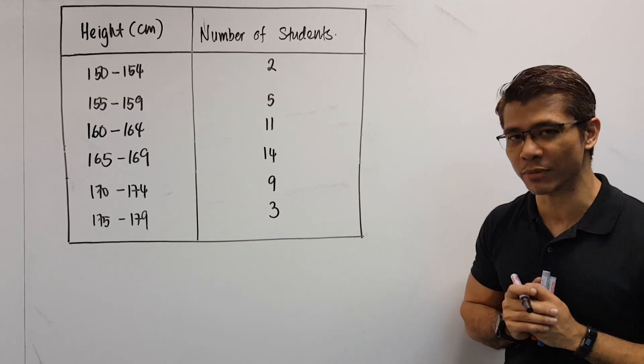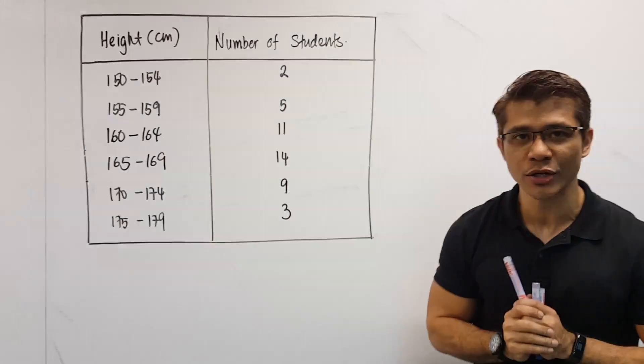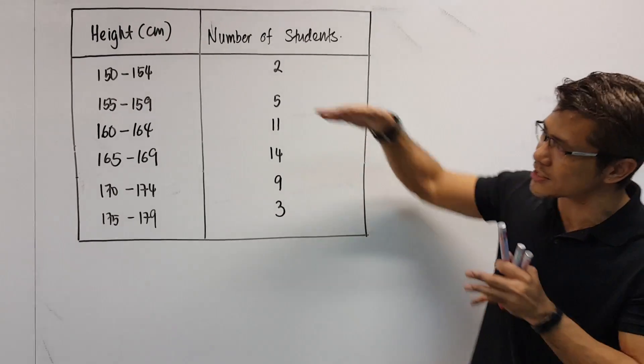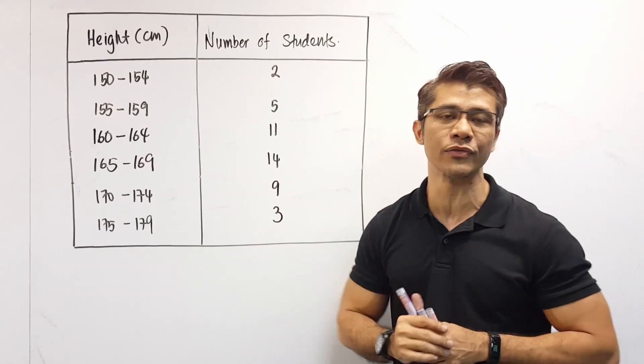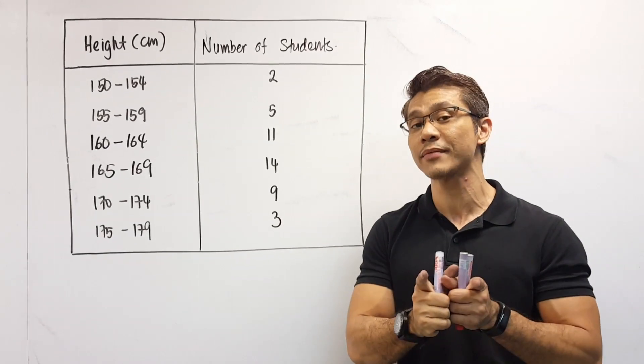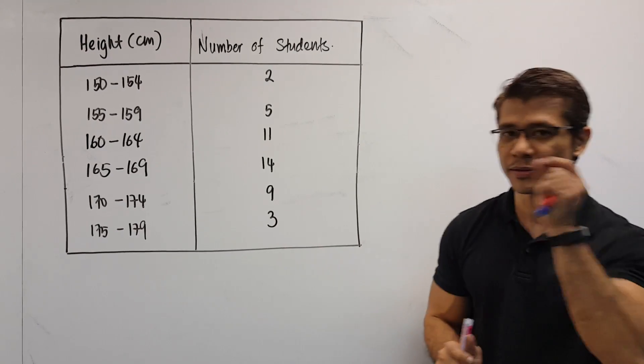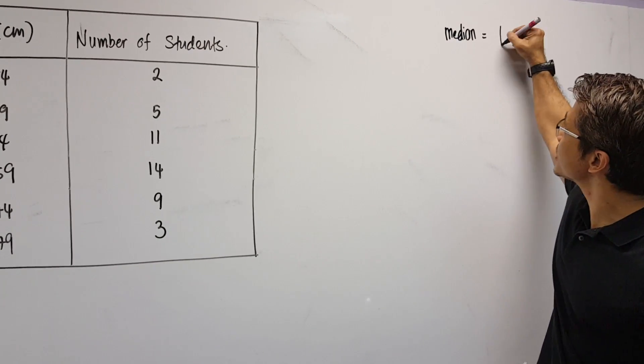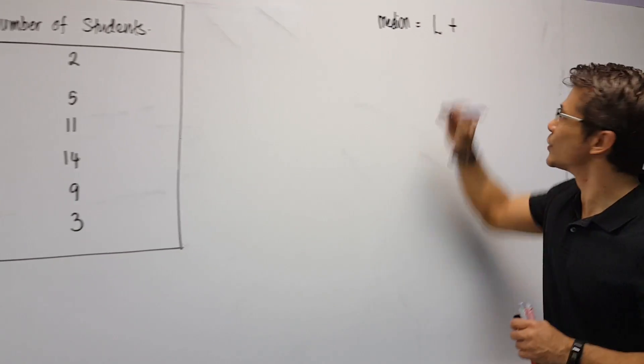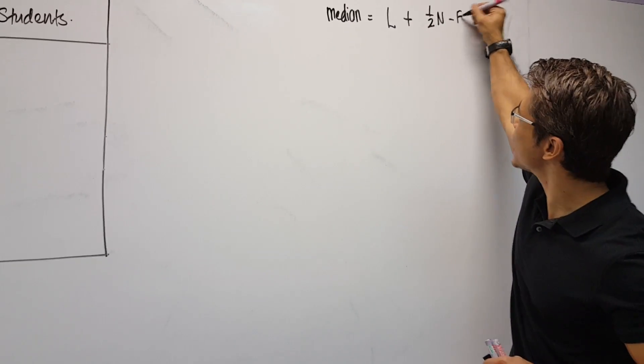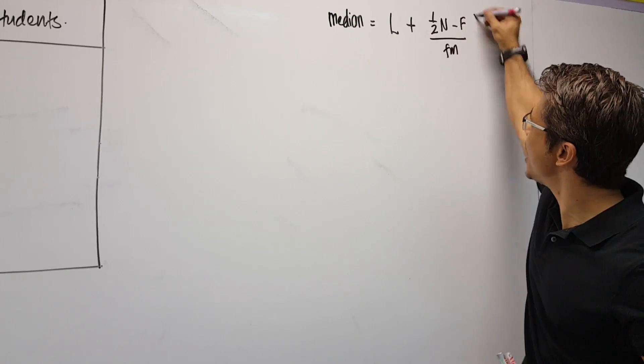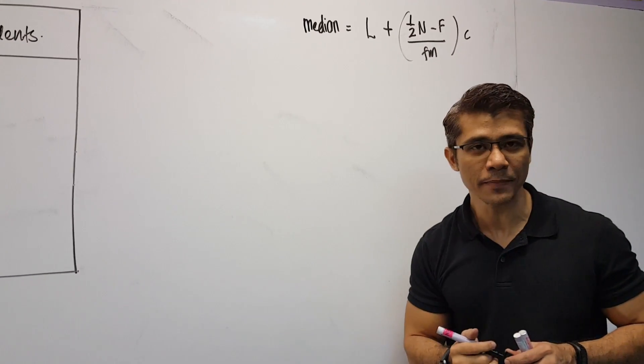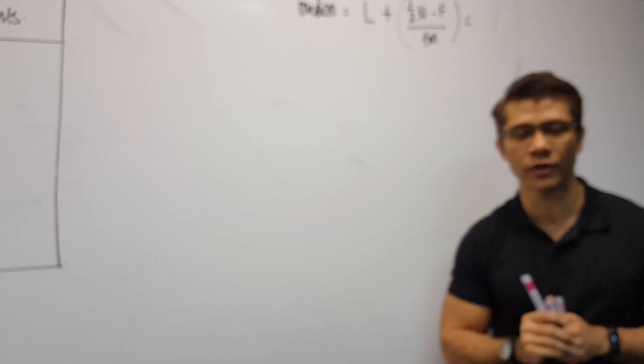Now what exactly is the median? Over here I have a table that shows the height of students. So the median will tell us that I'm looking for a value that's somewhere in the middle of these values. Now to do that, we are going to be using a formula. This formula: Median equals L plus 1 over 2n minus f over fn multiplied with c. But how do I apply this formula?